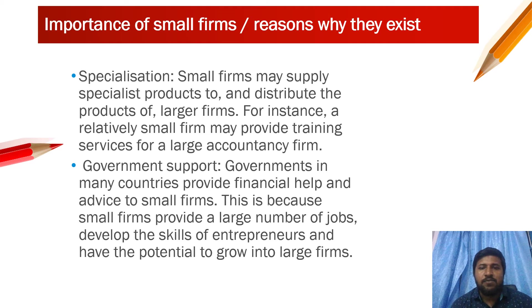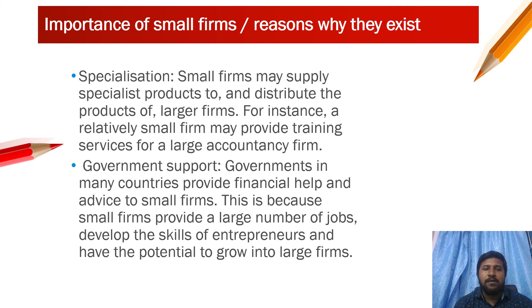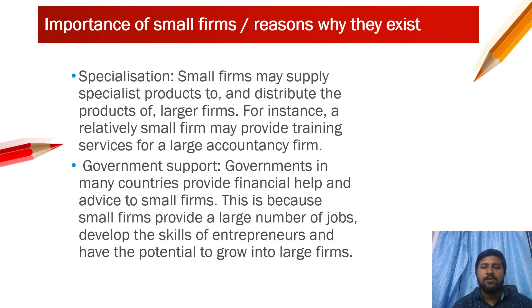Another reason is specialization — small firms may supply specialist products to and distribute the products of large firms. For example, a relatively small firm may provide training services for a large accountancy firm. Government support is also a factor: governments in many countries provide financial help and advice to small firms because they provide a large number of jobs, develop entrepreneurial skills, and have the potential to grow into large firms in future.